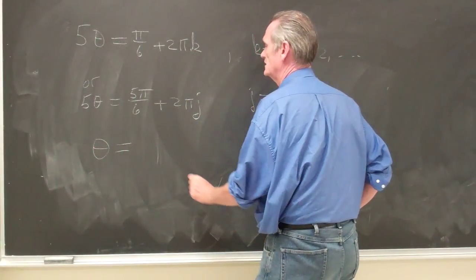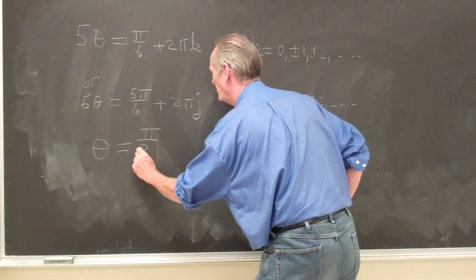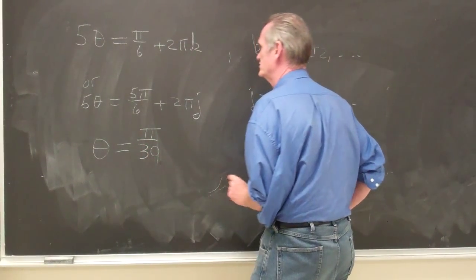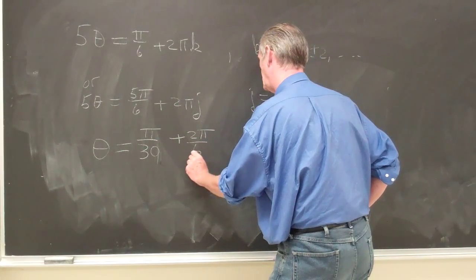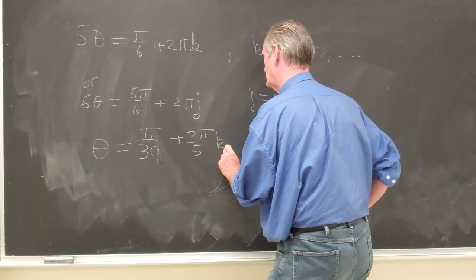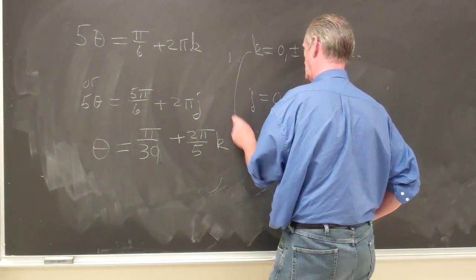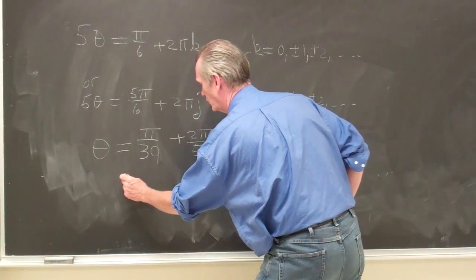We get theta is equal to pi over 30, 6 times 5 is 30, plus 2 pi over 5 times k. k has the same range as before.